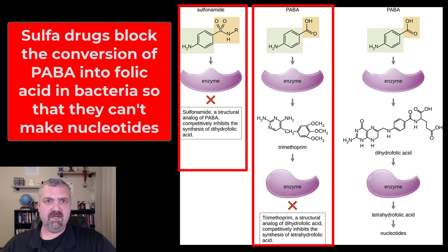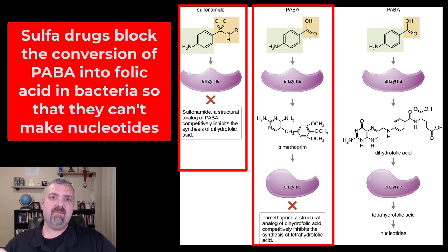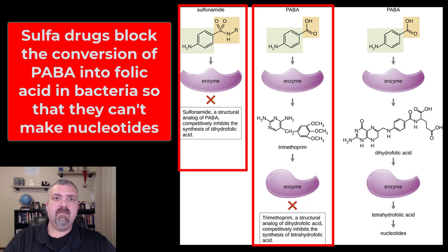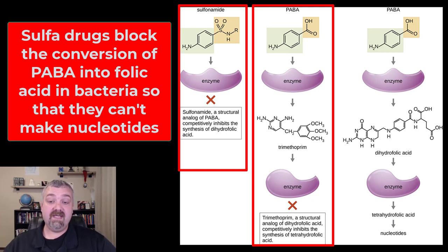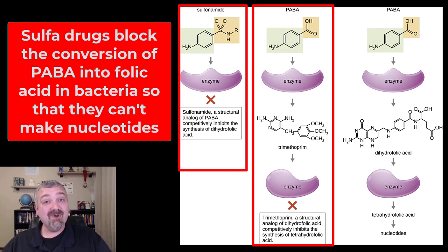The reason the sulfa drugs — sulfonamides, usually called sulfamethoxazole — work is they block an enzyme called PABA, or para-aminobenzoic acid, which microbes need to produce folic acid. If you block the production of folic acid, bacteria don't have folic acid. Without it they can't make the purines and pyrimidines which make the nucleic acids, so they can't make DNA, RNA, etc.